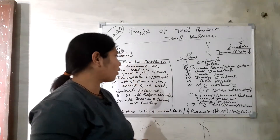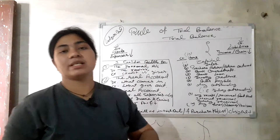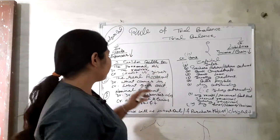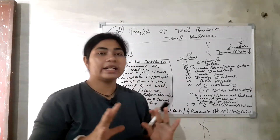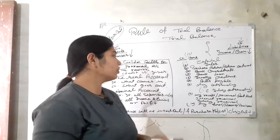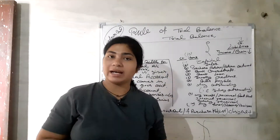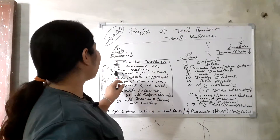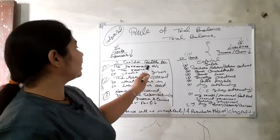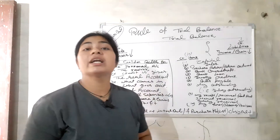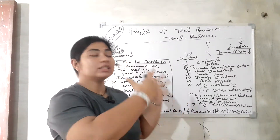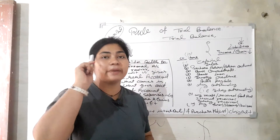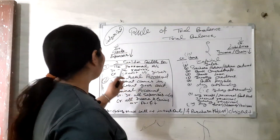You have to know the three rules of accounts — these are the golden rules of accounts. There are three types of accounts: personal account, real account, and nominal account. You must know these rules because all accounts are based on them. You must sit these three rules in your mind.